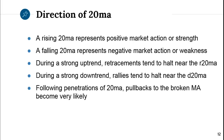The direction of the 20: a rising 20MA represents positive market action or strength. A falling 20MA represents negative market action or weakness. During a strong uptrend, retracements tend to halt near the rising 20MA. That should tell you that the correct entry is almost always going to be at or near the rising 20MA.